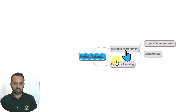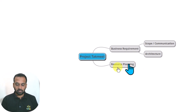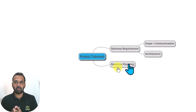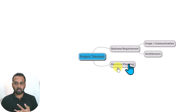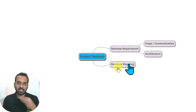So now looking into this, I have added here Project Takmil. First of all, we have the business requirement section, then scope and communications, then architecture, and then resource planning. Now when it comes to architecture, what they need here is they have an Excel file, they want to move it to Azure SQL or SharePoint, and they want to build Power Apps using Azure SQL, and Power BI and Power Automate. In order to do that, these architectural flows need to be considered, and first of all we need to consider the resource planning.